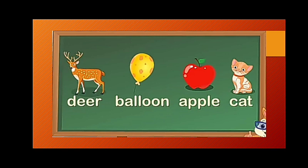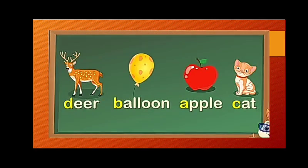deer, balloon, apple, cat. In these examples, the first letters are colored with yellow. Can you see children? The letters D, B, A and C. These words are not arranged in alphabetical order.